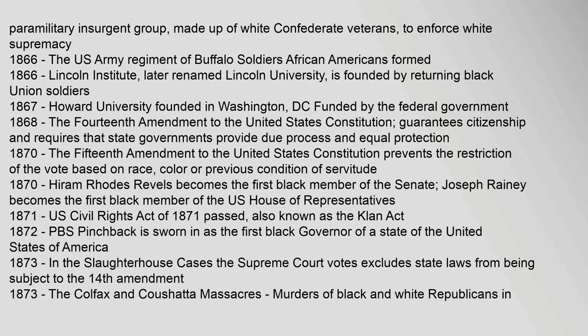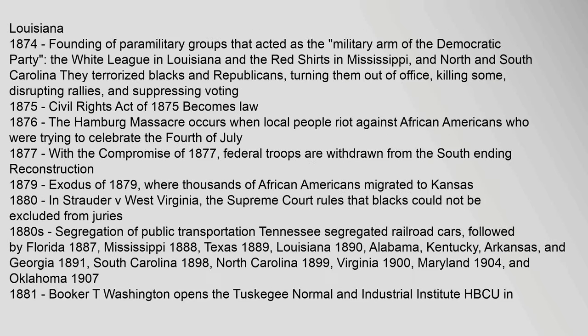In 1873, in the Slaughterhouse Cases, the Supreme Court excluded state laws from being subject to the Fourteenth Amendment; the Colfax and Coushatta Massacres involved murders of black and white Republicans in Louisiana. In 1874, paramilitary groups acting as the military arm of the Democratic Party were founded — the White League in Louisiana and the Red Shirts in Mississippi and the Carolinas — terrorizing blacks and Republicans, killing some, disrupting rallies, and suppressing voting. In 1875, the Civil Rights Act of 1875 became law. In 1876, the Hamburg Massacre occurred when local people rioted against African Americans trying to celebrate July 4th.